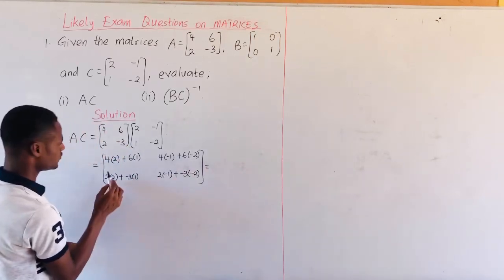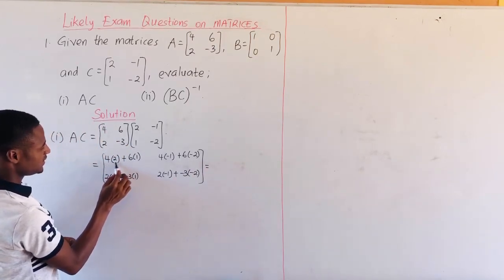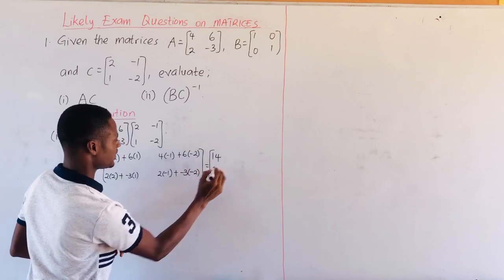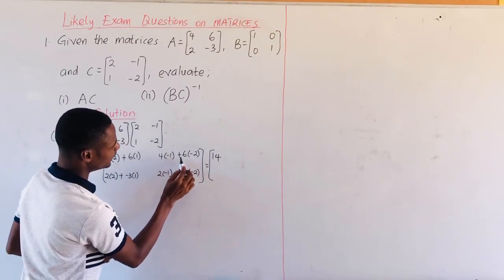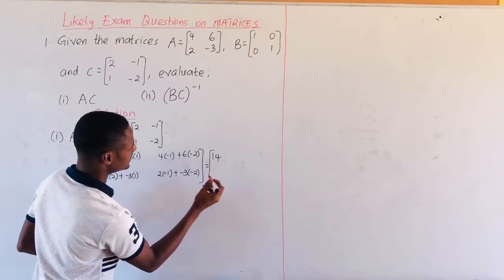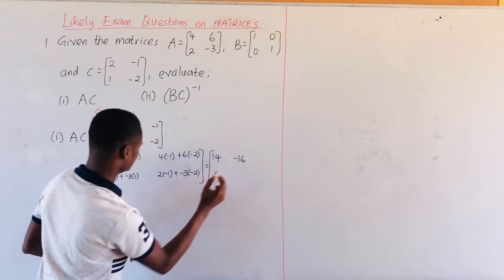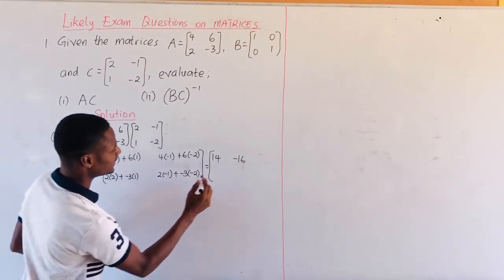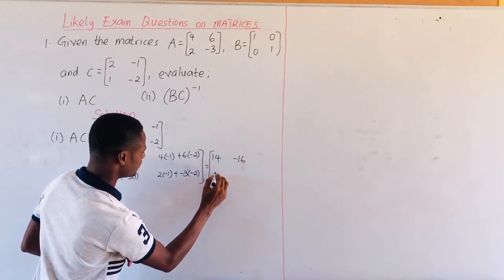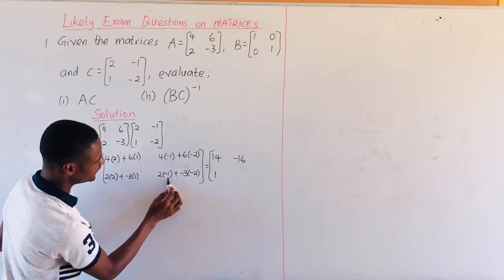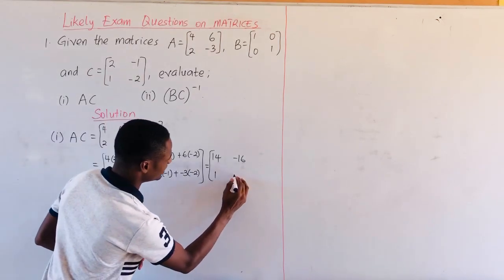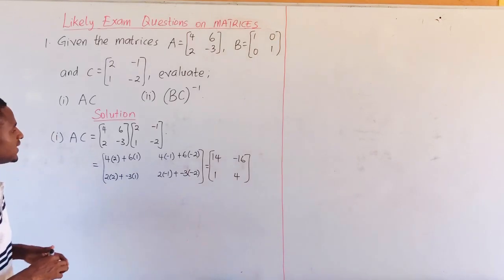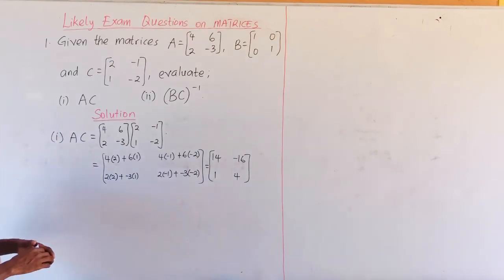This will be equal to 8 plus 6 is 14. Then negative 4 plus negative 12 is negative 16. 4 minus 3 is 1, and negative 2 plus 6 is 4. So this is A times C.